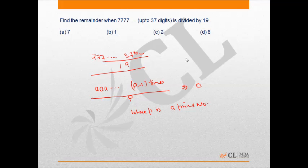So if 777 would have been written for 18 times and divided by 19, the answer would have been 0 remainder. If we write it 36 times, the remainder would have been 0. But if we have written it 37 times, the answer for this question is 7 as the remainder.